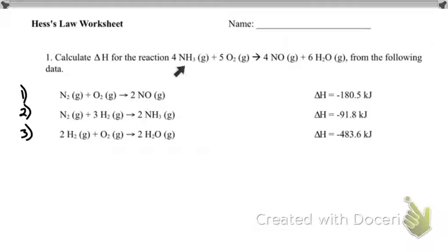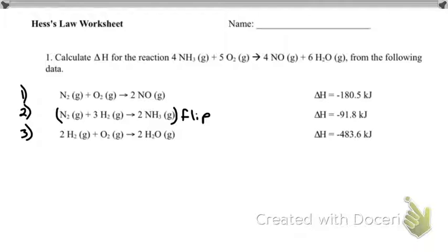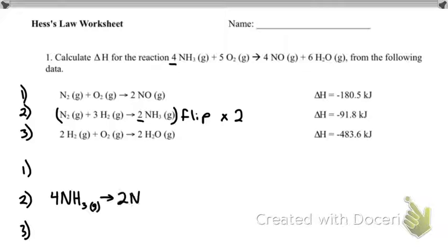I see NH3 over here — the only NH3 I have is there. I need four of them and I only have two, so I need to flip this reaction so it's on the reactant side. I need to multiply it by two, and I'll rewrite that reaction down here — that's the exact same reaction as above, just flipped and multiplied by two.